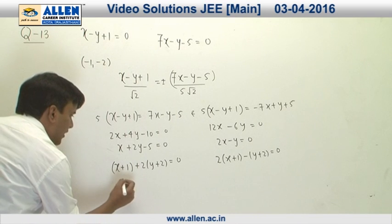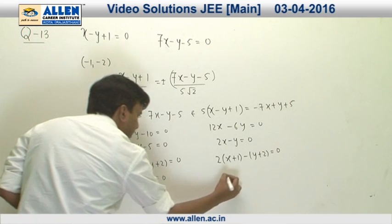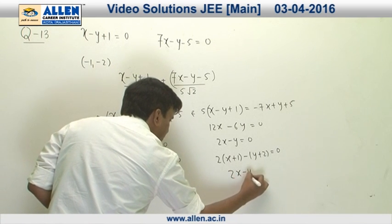One of the diagonals is going to be x + 2y + 5 = 0 and this is going to be 2x - y = 0.